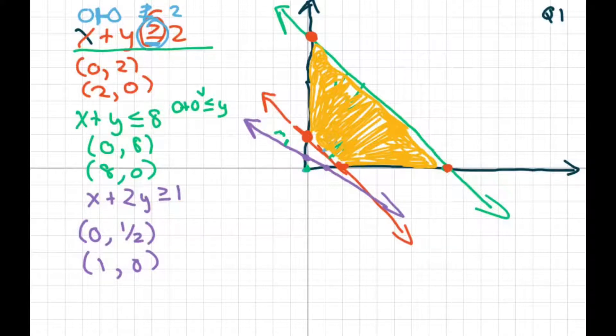And that would be 0, 2, 0, 8. The ones on our two y-intercepts and our two x-intercepts were 2, 0 and 8, 0.